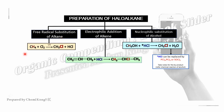From alkane reacting with halogen under UV light, haloalkane is produced. Please take note: if the halogen is changed to bromine, then CH2Cl2 is used as an inert solvent with UV light. This is the reaction of alkane with bromine solution, so the reddish-brown color of bromine will decolorize.